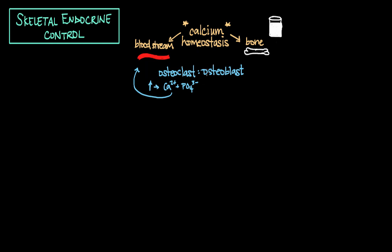The opposite is true if this ratio reverses: as the activity of osteoblasts increases, you get calcium and phosphate going from the bloodstream back into bone. That's the gist of calcium homeostasis.